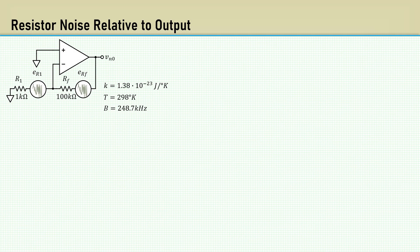Let's move forward and calculate the resistor noise contributions relative to the output. The feedback resistor noise adds directly to the output, so it's just the noise of a 100K resistor.